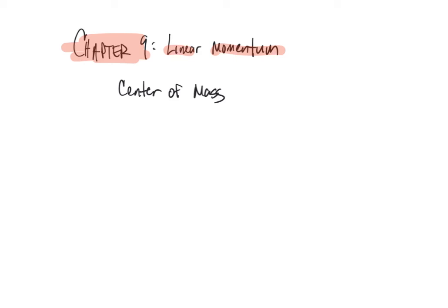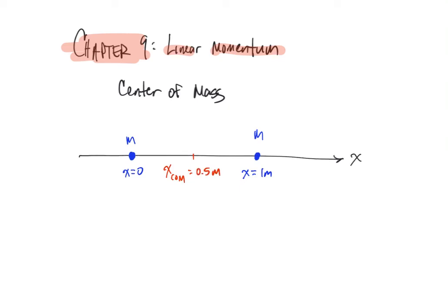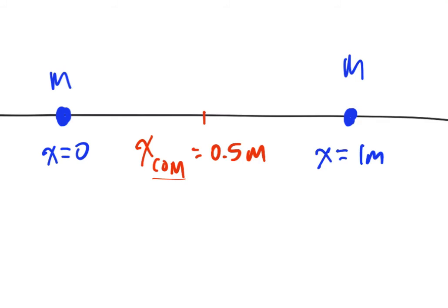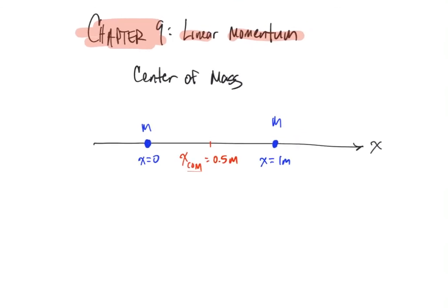Center of mass means probably what you would think it would mean. If you have a group of objects, we can locate the center of mass by doing a weighted average, as we'll see. For a simple example, imagine an x-axis with two particles each of mass m — one at x equals zero and one at x equals one meter. The center of mass would be right in the middle: x_com equals 0.5 meters. COM is the abbreviation frequently used for center of mass.